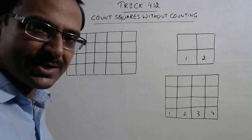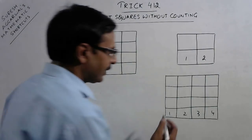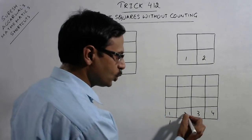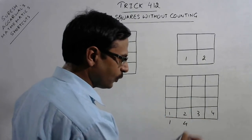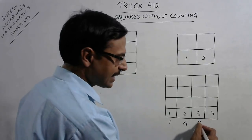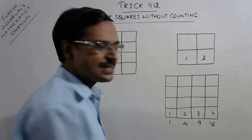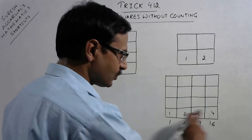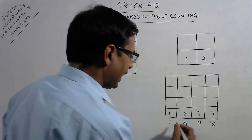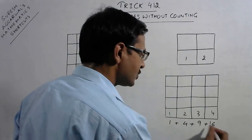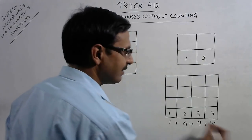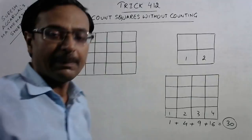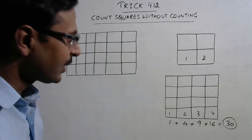How do you do this? You have to write the squares of these four numbers. 1 squared is 1, 2 squared is 4, 3 squared is 9, and 4 squared is 16. Just write the squares of all the numbers in the bottom row and add them. So 16 plus 9 is 25, plus 5 is 30. The total number of squares in this figure is 30.